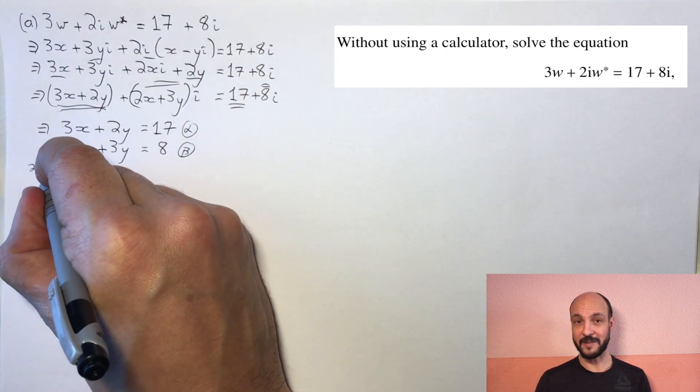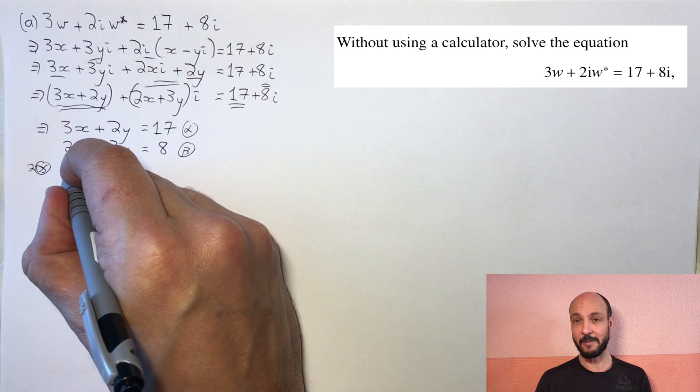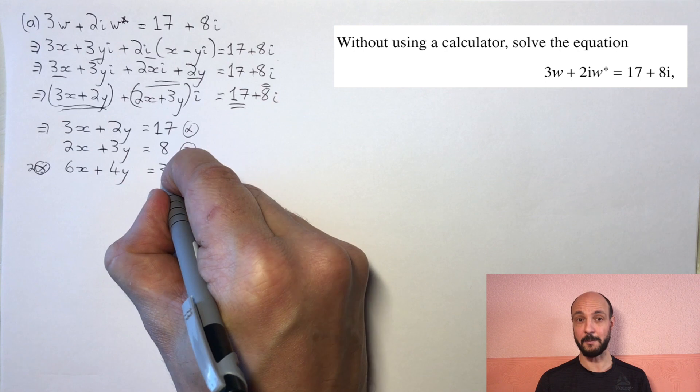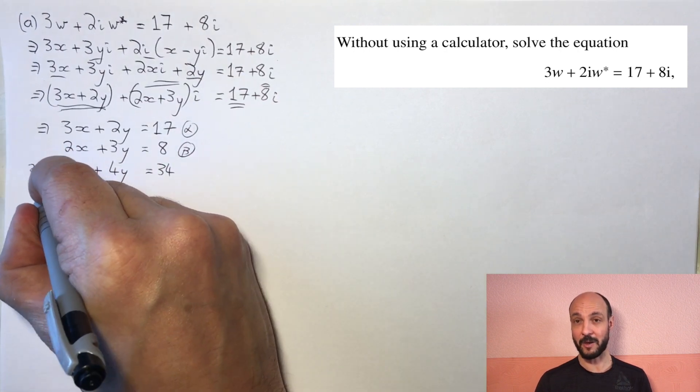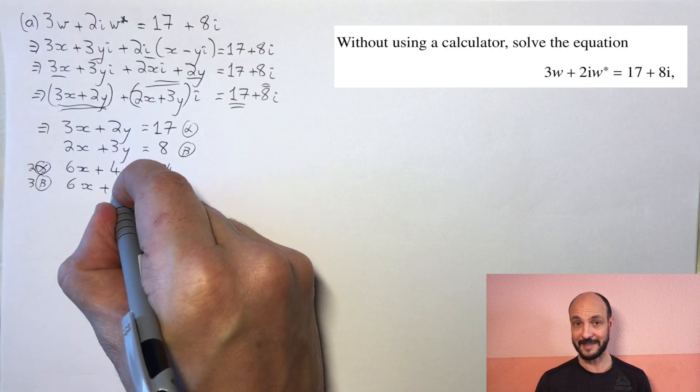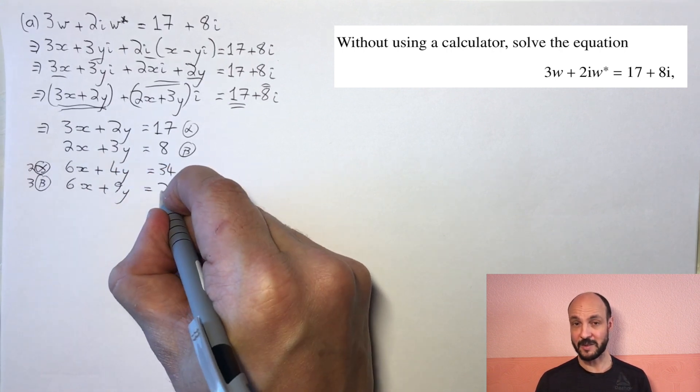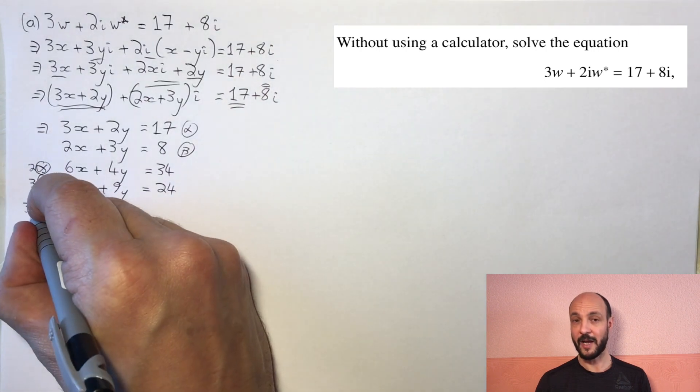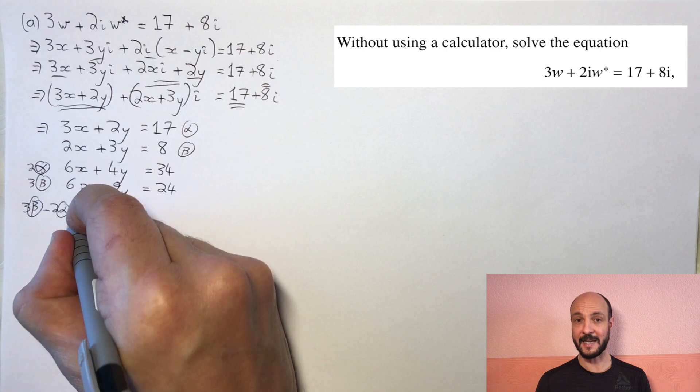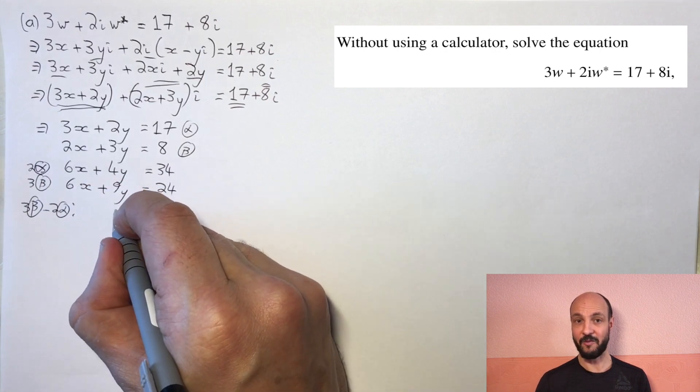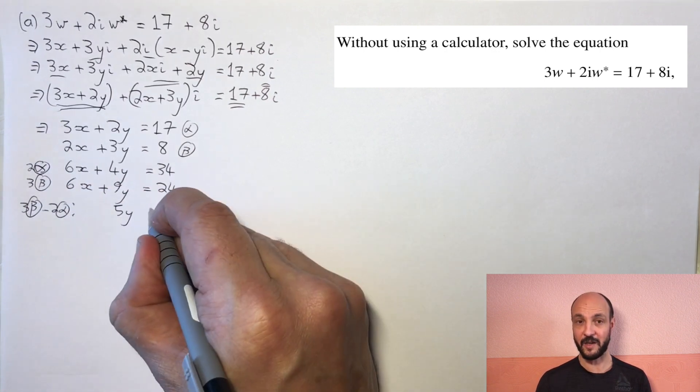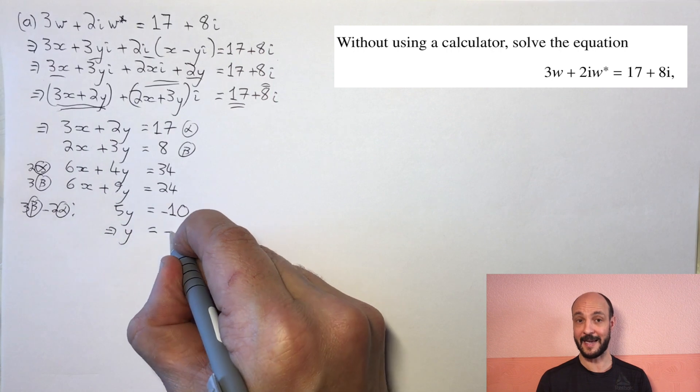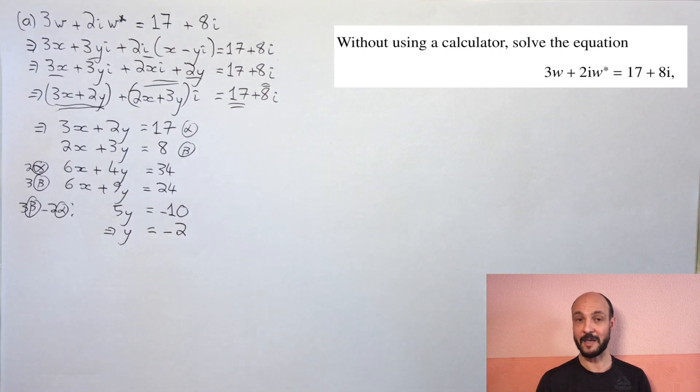Now, in order to solve these simultaneous equations, various methods to do it. I'm going to multiply equation alpha by 2, all the way through, and multiply equation beta by 3, and then we'll have 6x in both equations, and we can subtract the equations to get rid of that 6x. So 2 times equation alpha gives us 6x plus 4y equals 34, and 3 times equation beta gives us 6x plus 9y equals 24, and then if we do our twice equation alpha subtracted from our 3 times equation beta, we get 5y equals minus 10, which gives us that y equals minus 2.